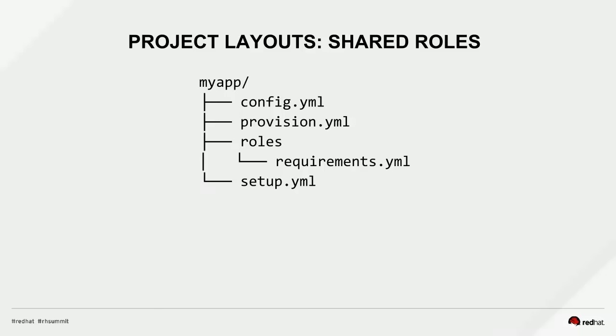Over time, in a large enough organization, you'll want to start sharing your roles. Say you're a DevOps team and you've created a MySQL role, an Apache role, or an in-house proprietary application role, and other teams in other regions or business units want to use it. In that case you can use a requirements.yaml file and the Ansible Galaxy tool, which allows you to very easily pull from a shared repository — whether those are public Ansible Galaxy roles or your own internal ones held in version control behind your firewall.